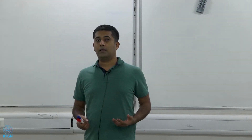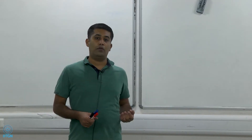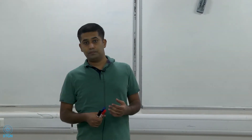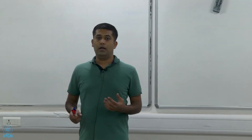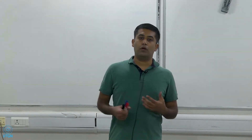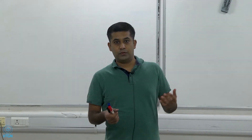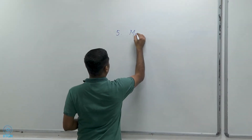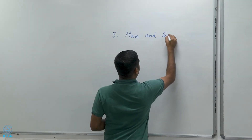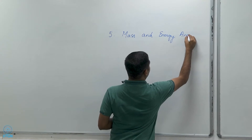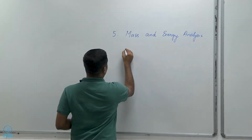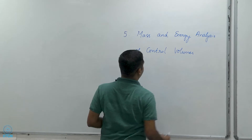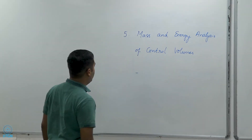Open systems, or control volumes as we like to call them, are very practical and found everywhere. So we need to know how to analyze the mass and energy of such systems, and that is what this chapter is about. Before we begin with energy, we need to look at mass in the context of open systems — so we're talking about Chapter 5, and in this video we will be talking about mass.